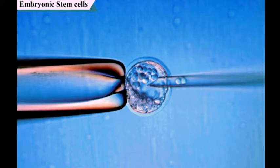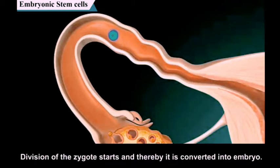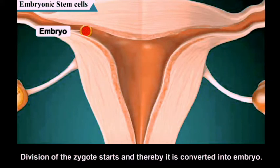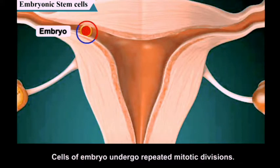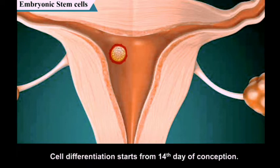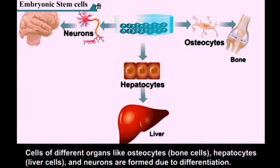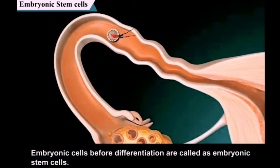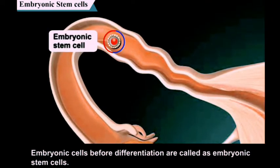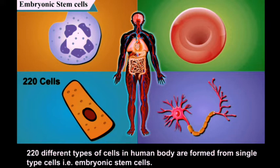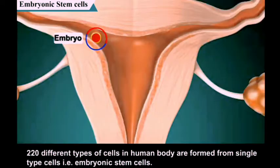In embryonic stem cells: division of the zygote starts and it is converted into an embryo. Cells of the embryo undergo repeated mitotic divisions. Cell differentiation starts from the 14th day of conception. Cells of different organs like osteocytes (bone cells), hepatocytes (liver cells), and neurons are formed due to differentiation. Embryonic cells before differentiation are called embryonic stem cells. About 220 different types of cells in the human body are formed from this single type of cell.